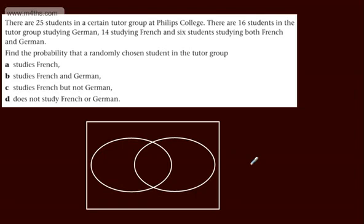In this question, we're told there are 25 students in a certain tutor group at Phillips College. There are 16 students in the tutor group studying German, 14 studying French, and 6 students studying both French and German.